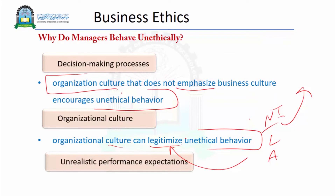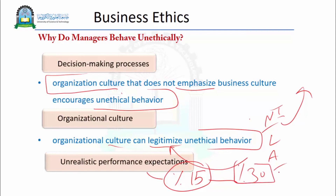Unrealistic performance expectations are another reason. If the company expects a 15% increase in sales, the manager will think only about reaching this goal. If the objective is 30%, this is very difficult to achieve — we say this is an unrealistic performance expectation. So managers will do whatever means necessary to achieve this rate without thinking of ethical issues. That is why unrealistic goals are another reason why managers behave unethically.